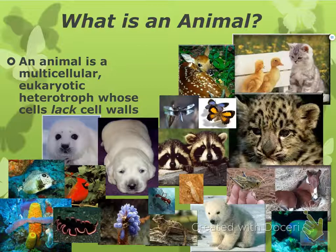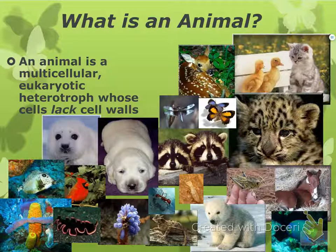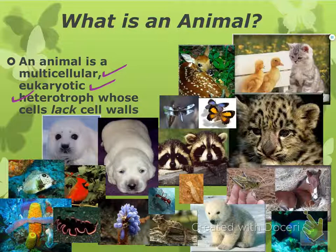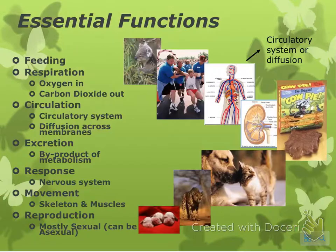So what is an animal? An animal is multicellular, eukaryotic, and a heterotroph. And remember, their cells do not have cell walls — they have cell membranes, which gives them the flexibility and the ability to move, unlike plants.